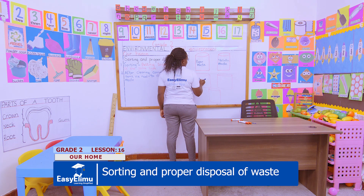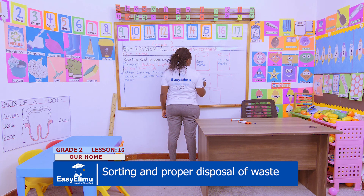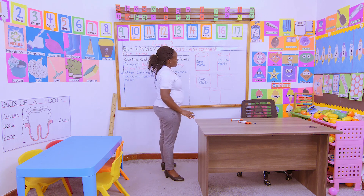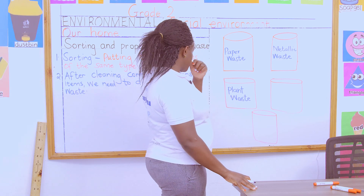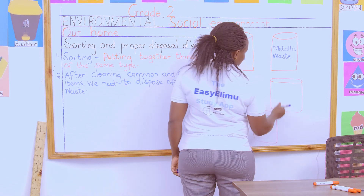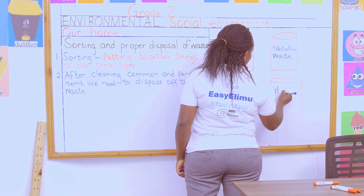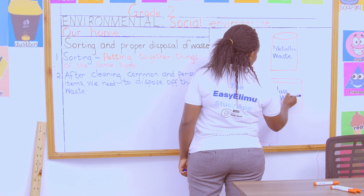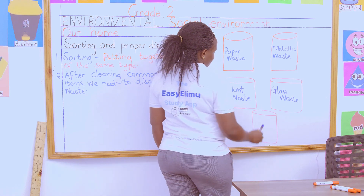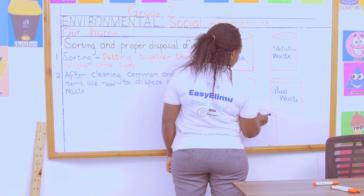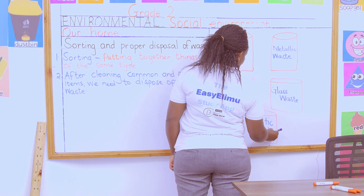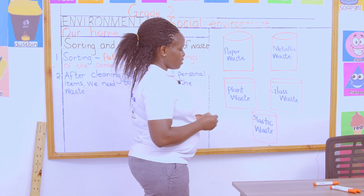Then I'll come here and label this as plant waste. I'm from washing utensils and we ate sukumawiki yesterday — the remains automatically fall in plant waste. We have eaten fruits and the peels will automatically be put in plant waste. In case I have any broken glass, it will fall in the glass waste bin. And any plastic thing that broke or is not in use will fall in the plastic waste bin.